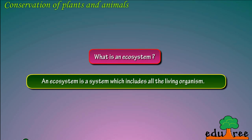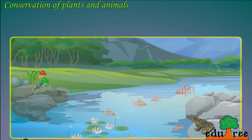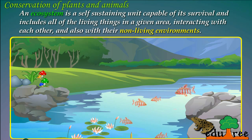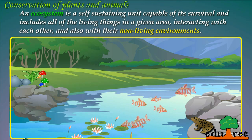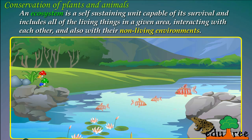What is an Ecosystem? An ecosystem is a system which includes all the living organisms. It is a self-sustaining unit capable of its own survival, and includes all of the living things in a given area, interacting with each other and also with their non-living environments.